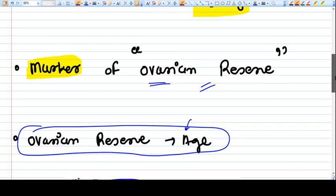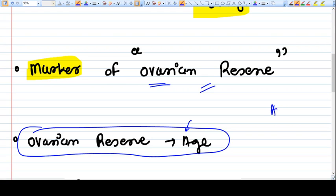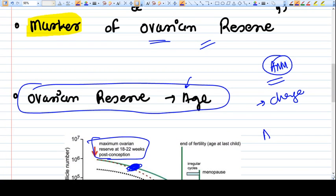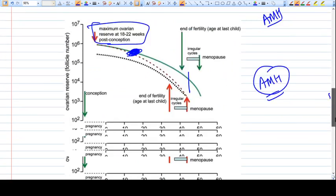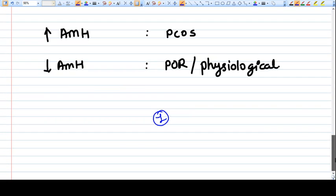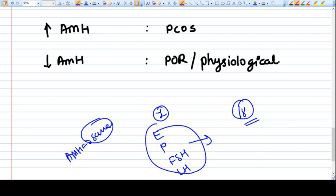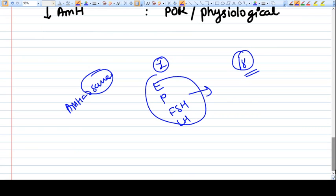What is a striking feature of AMH is that it does not change with the days of the menstruation cycle. For example, if I measure AMH on day one of the menstruation cycle and if I measure AMH on day eighteen of the menstruation cycle, the AMH will be the same. Meanwhile, all other hormones like estrogen, progesterone, FSH, LH, all these hormones will be changing according to the menstruation cycle.